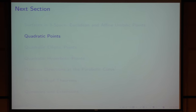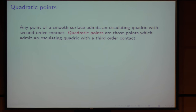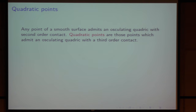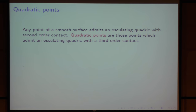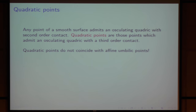The main theme of this talk is about quadratic points. Any point of a smooth surface admits an osculating quadric with second-order contact. Quadratic points are those points that admit an osculating quadric with third-order contact. As I have mentioned, they do not coincide with the affine umbilic points — they are different points.